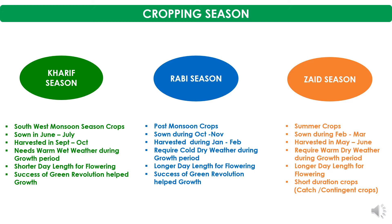Kharif season crops are southwest monsoon season crops where sowing takes place during the months of June to July and harvesting from September to October. Kharif season crops need warm, wet weather during the growth period, and these crops have shorter day length for flowering. The success of the Green Revolution helped the growth of Kharif season crops, as rice showed significant improvement in production and productivity.